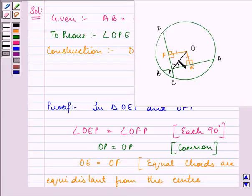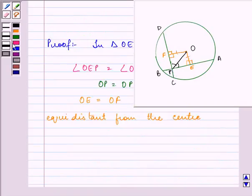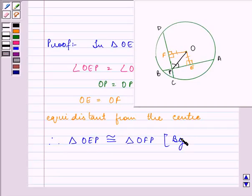They both are 90 degree each and this is the common side. So, therefore, triangle OEP is congruent to triangle OFP by RHS congruency criteria.